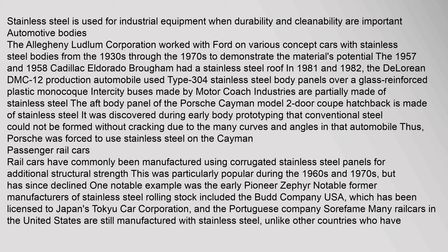Stainless steel is used for industrial equipment when durability and cleanability are important. The Allegheny Ludlum Corporation worked with Ford on various concept cars with stainless steel bodies from the 1930s through the 1970s. The 1957 and 1958 Cadillac Eldorado Brougham had a stainless steel roof. In 1981 and 1982, the DeLorean DMC-12 used type 304 stainless steel body panels over a glass-reinforced plastic monocoque. Intercity buses made by Motor Coach Industries are partially made of stainless steel. The aft body panel of the Porsche Cayman is made of stainless steel, as conventional steel could not be formed without cracking due to the many curves and angles.